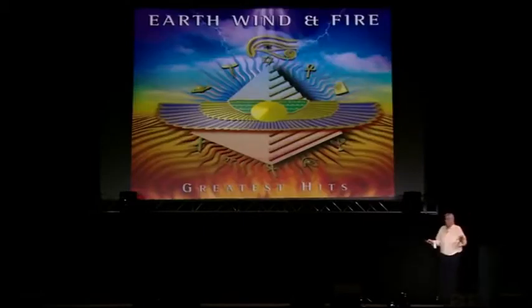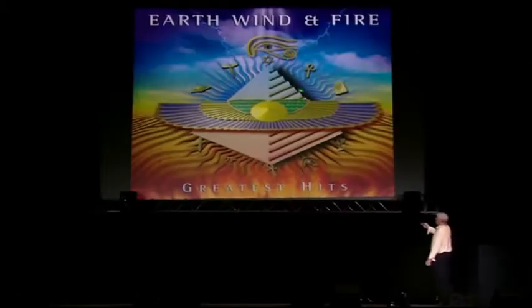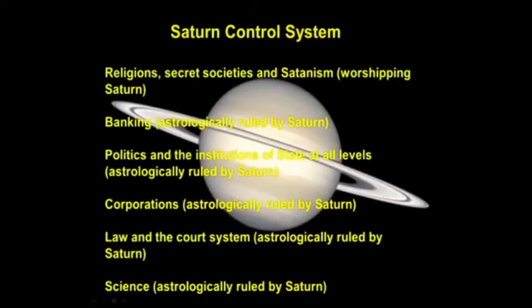And Earth, Wind and Fire — they've got the full set: there's the eye, the six-pointed star, the step pyramid, the winged disc, and Saturn. Therefore, when you look at religions and secret societies and Satanism, they're worshipping Saturn.